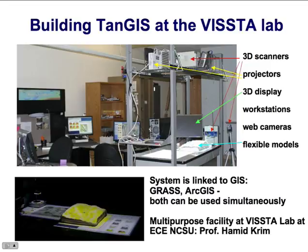We were fortunate to build a similar system here at NC State at the Department of Electrical and Computer Engineering using a 3D scanner, which is located here. This scanner is coupled with a projector — we actually have two projectors so that we can project different kinds of images. That's linked to several workstations, and the core is the flexible model that is used as an interface.